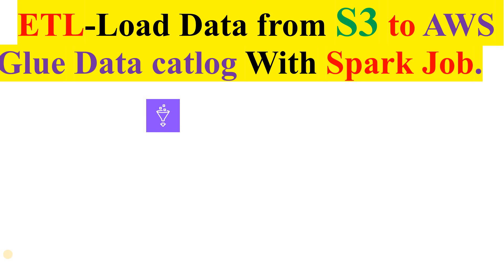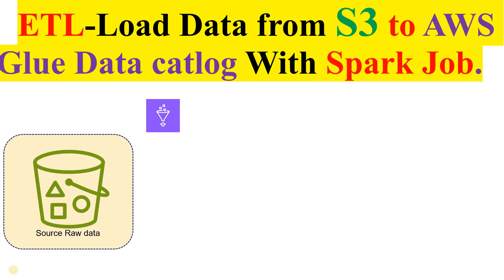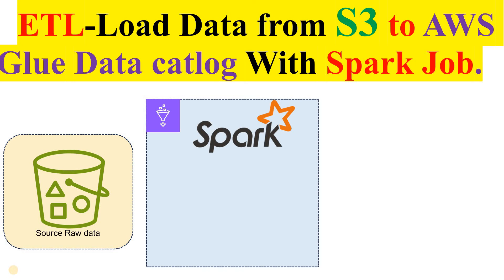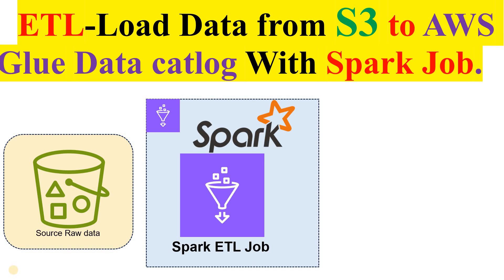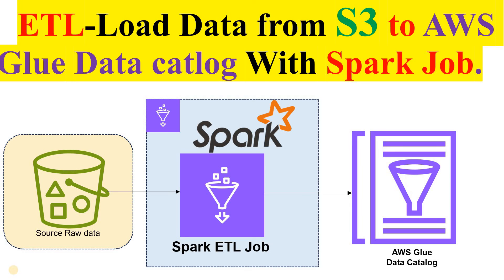In this video, we're going to see how to load data from Amazon S3 Bucket to AWS Glue Data Catalog using a Spark job. Here, we will have source data kept in Amazon S3 Bucket in the form of a CSV file. We're going to construct a PySpark job in AWS Glue, and that job will be extracting the data from this source raw data and outputting it to AWS Glue Data Catalog Database and Table.